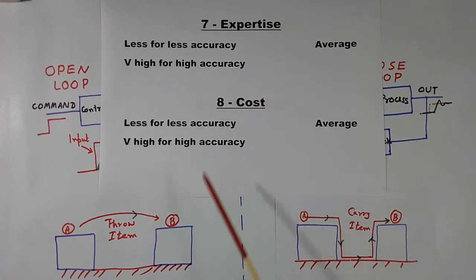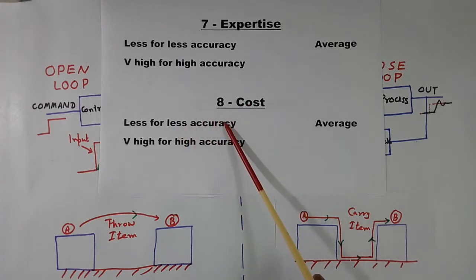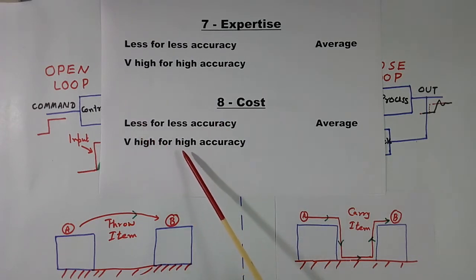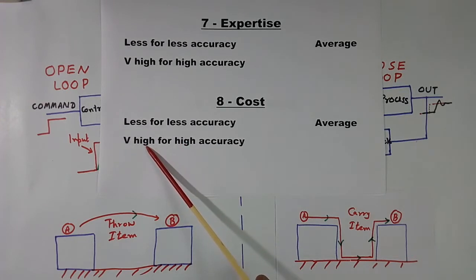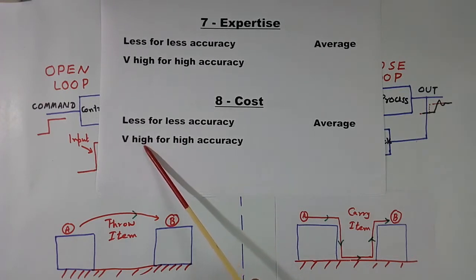Cost wise, cost cannot be explained using this block. But when we require less accuracy in control system, open loop control system cost will be less. Because when we want high accuracy, then cost will become very high. Because system becomes extensive, they become complex. Compared to this, I am telling average. There is nothing like more or less. Everything is compared.